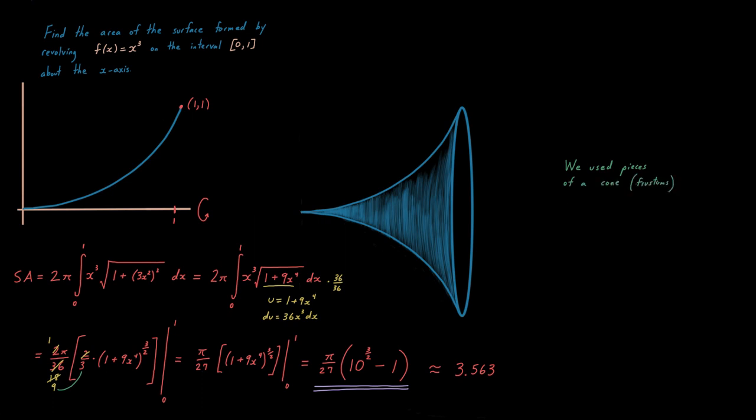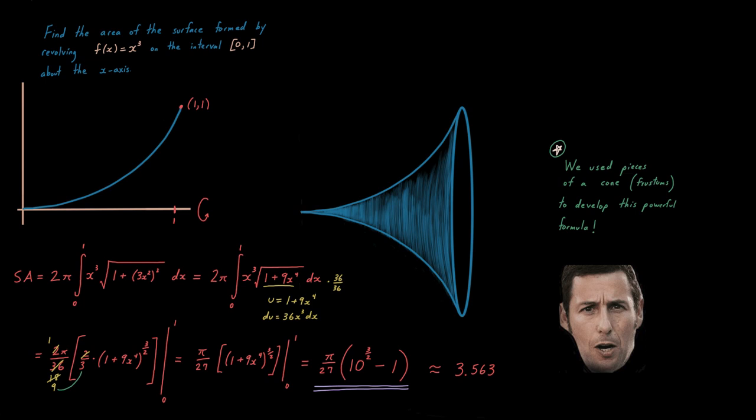Again, notice the theme of this video. We're using pieces of a cone. We used pieces of a cone called frustums to develop the powerful formula that we used to find the volume of the surface area of a sphere and the surface area of this angel horn. This is very powerful and it's also quite bizarre. It's quite bizarre. Even Adam Sandler thinks so. Even he does too. This is quite bizarre. It's really bizarre.